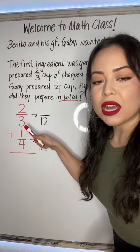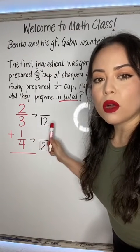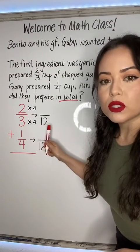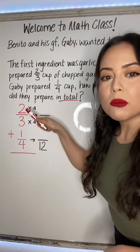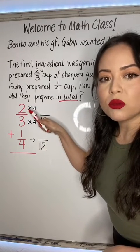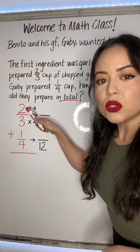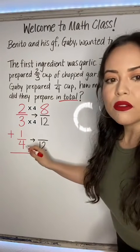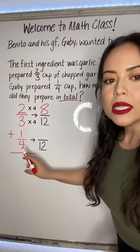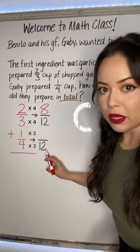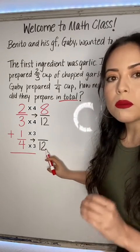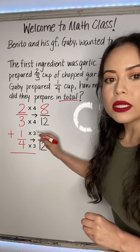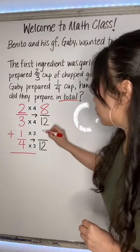To make the first fraction have a denominator of 12, we had to multiply by four. Three times four is 12, so we must do the same to the numerator. Two times four is eight. Same thing to the second fraction — to get from four to 12, we had to multiply by three, so we must multiply the numerator by three as well. One times three is three.